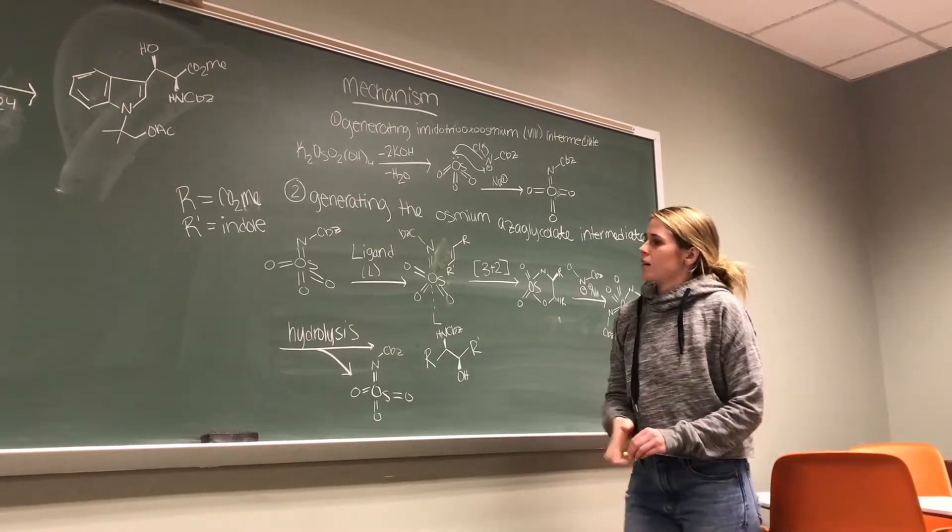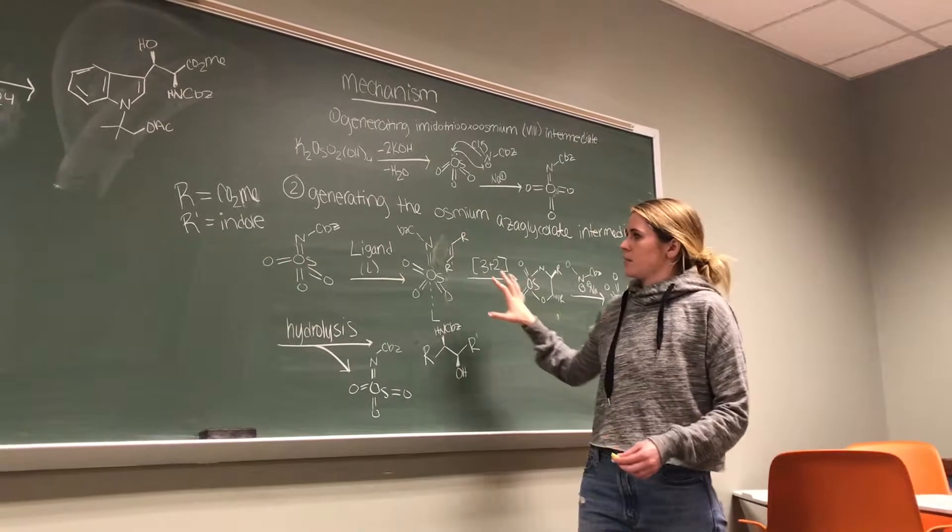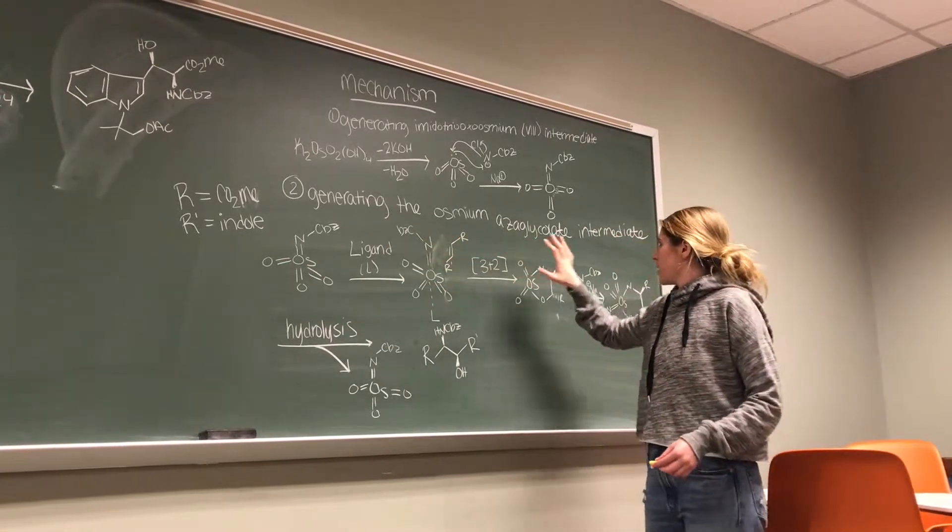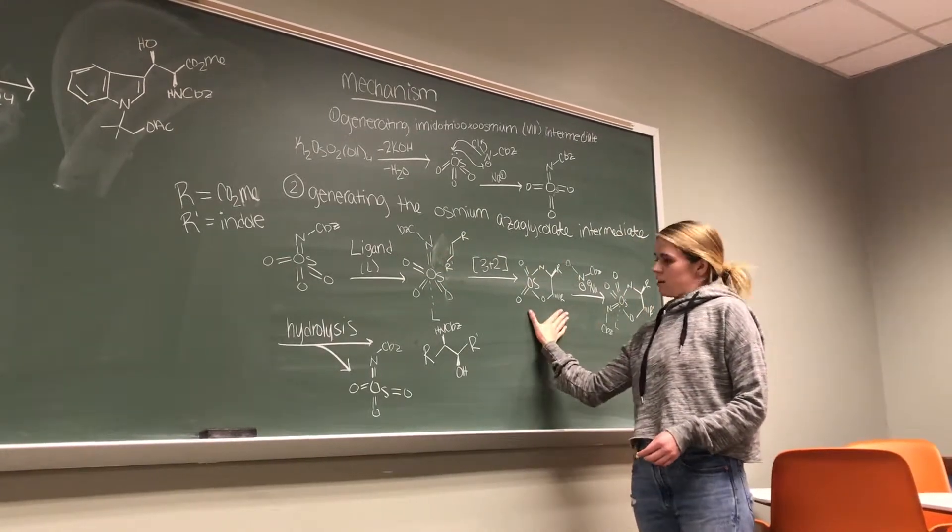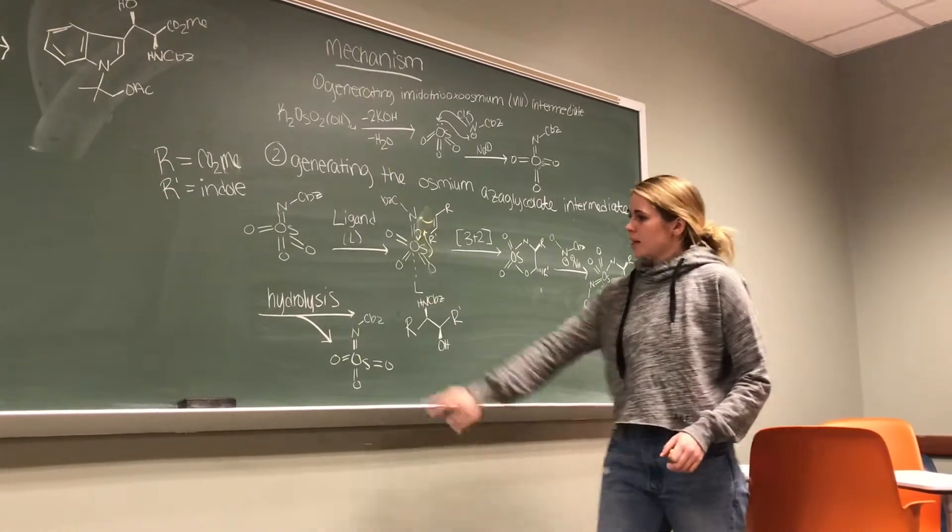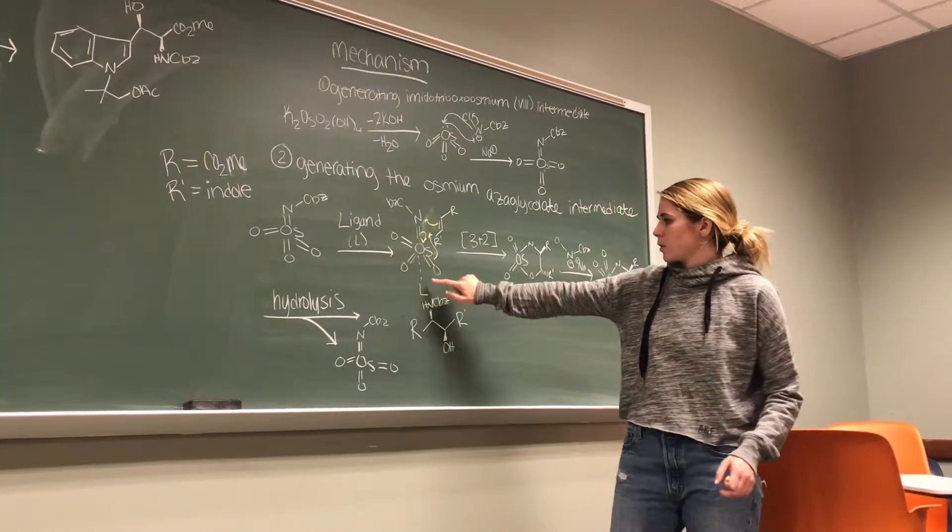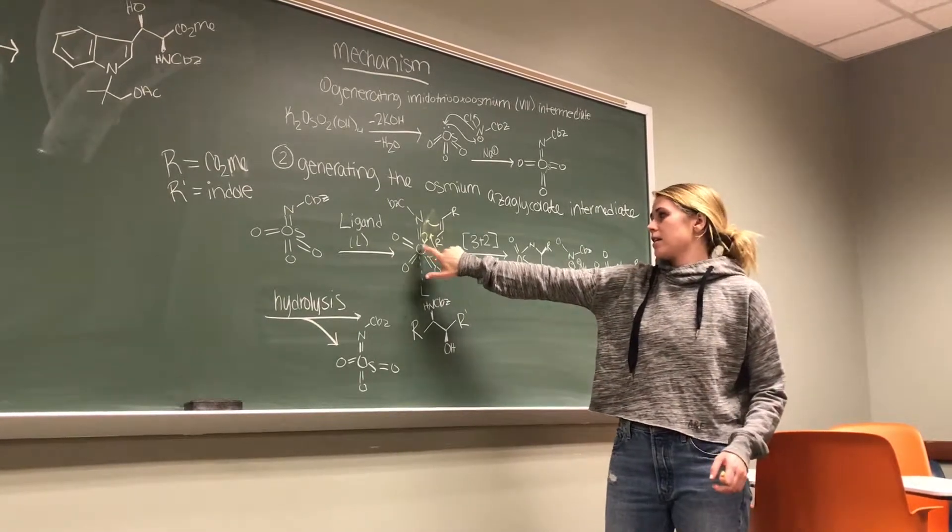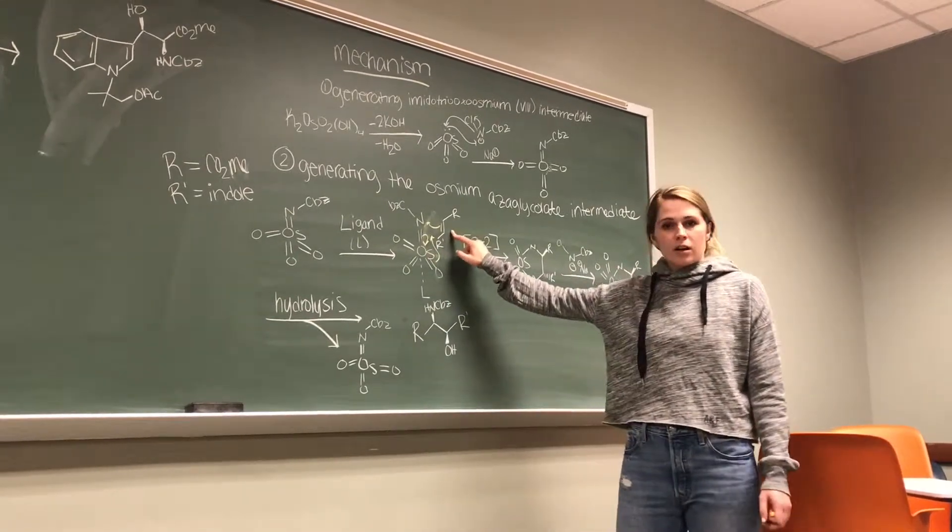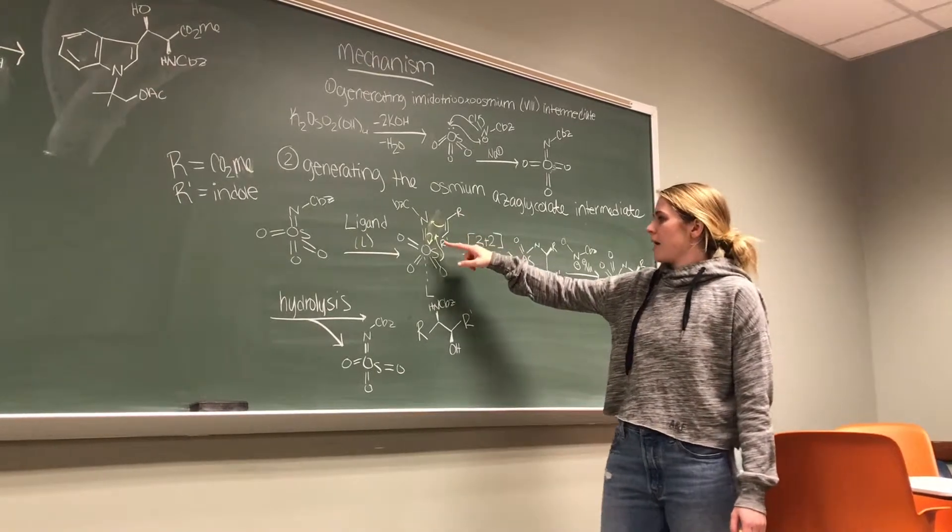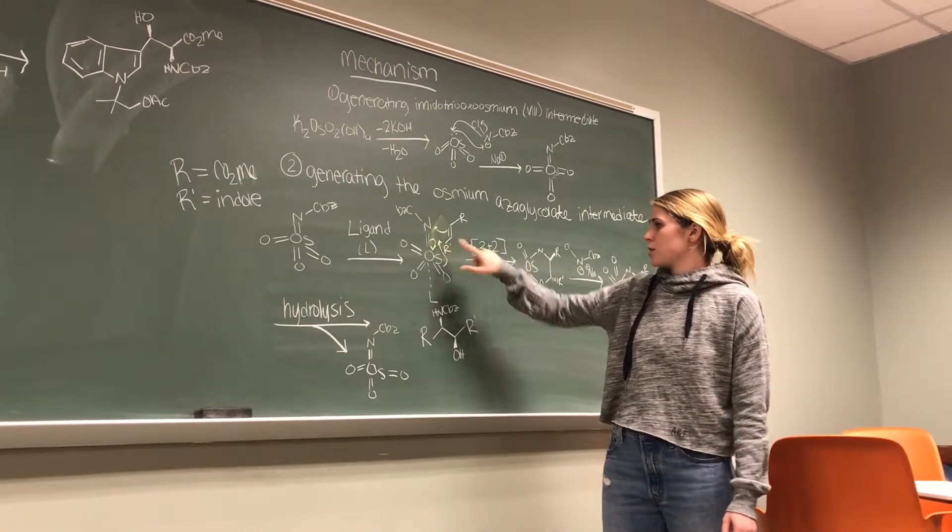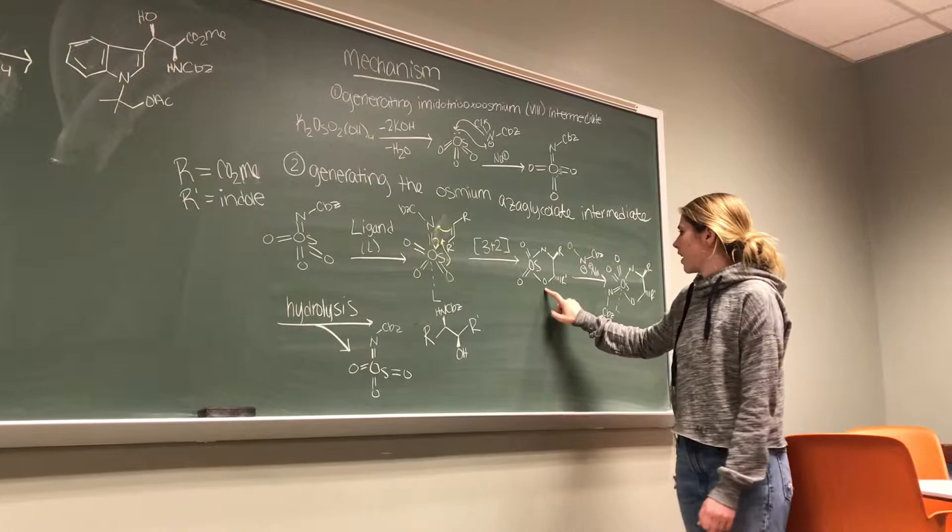That then goes down into our second portion of the mechanism, which is generating the osmium azoglycolate intermediate, which is this intermediate right here. So we take this intermediate and we bring in our chiral ligand. And the ligand will coordinate with this osmium. And then the next step is our alkene from our starting material will come in and it will undergo a 3+2 cycloaddition to form this five-membered ring.